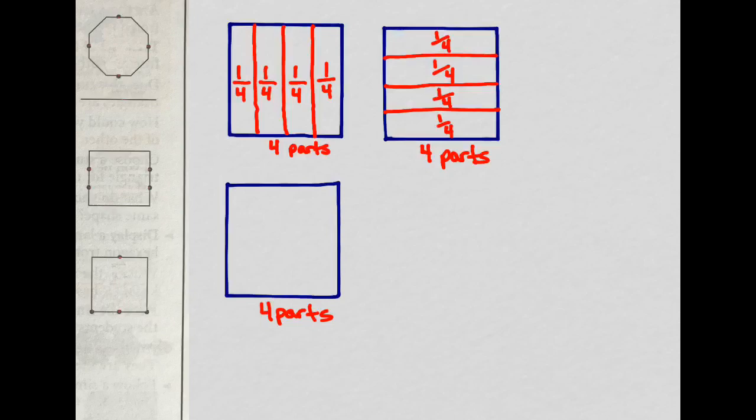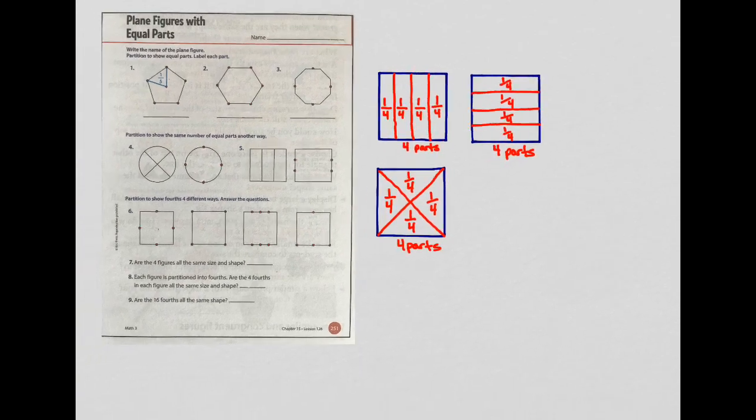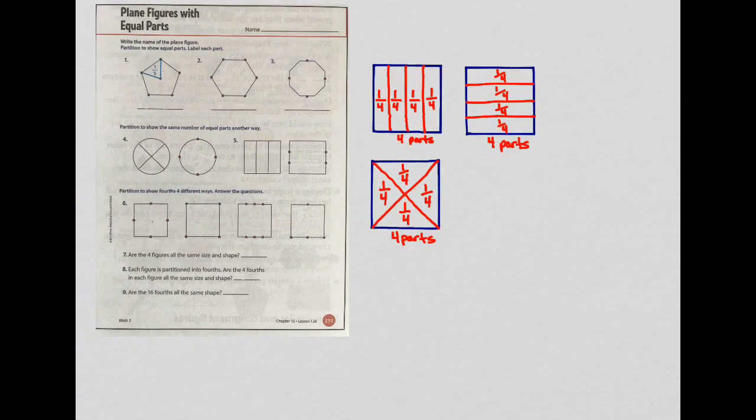Well, you could also divide it like this. I'm trying to get this line pretty straight. That gives you four equal parts. Each piece would also be one-fourth of the square. So I'm going to label each piece. And there you go. And that's what we're doing today.